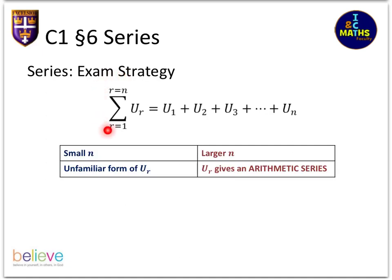When sigma questions come up on the exam, there are basically two different strategies depending on the features. If you've got a small n—not many terms to add up—and especially if that formula looks really weird or unfamiliar, that's one type of question.